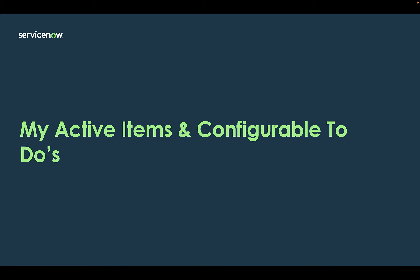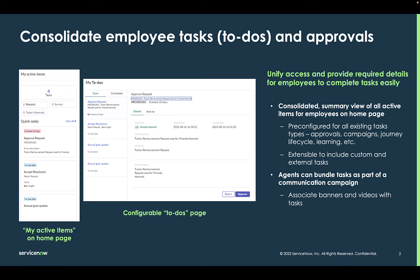This is an overview of MyActiveItems as well as configurable to-dos. The MyActiveItems widget allows you to consolidate all of your employee tasks and approvals into one single widget. It displays a summary view of a user's open activities across all departments and only shows activities that a user has access to. Activities can include tasks, HR or IT requests, surveys, as well as reservations if you are utilizing workplace service delivery.